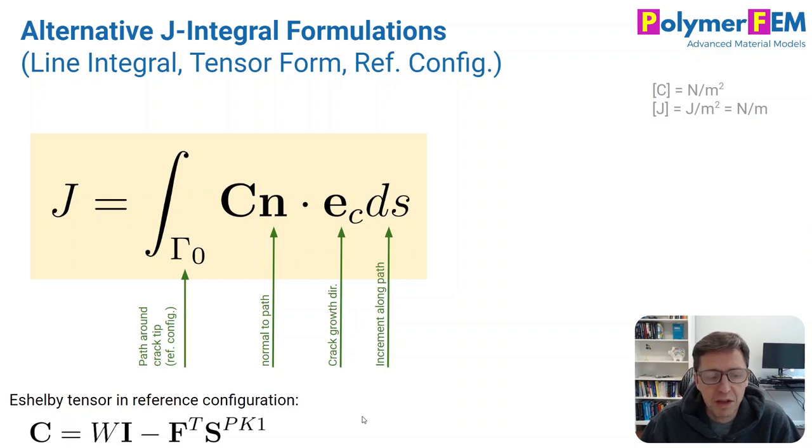C here is a second-order tensor called the Eshelby tensor and it's defined down here. It's a quantity that depends on the strain energy density, the deformation gradient, and the first Piola-Kirchhoff stress. All of which we know if we have say a finite element simulation. N is normal to the path and this is the crack growth direction.